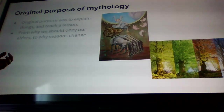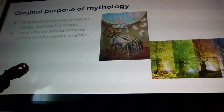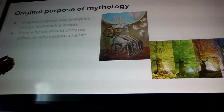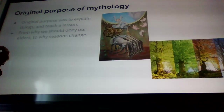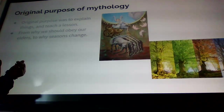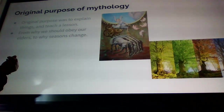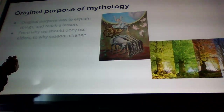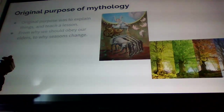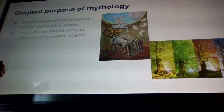That story we'll get to later. Another example of lessons that were supposed to be taught was the story of Icarus and Deuteronomy, which was about the importance of obeying your elders.